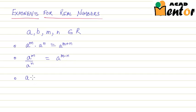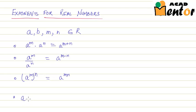The third property: a to the power m, whole to the power n, is equal to a to the power mn. The fourth one: a to the power m, multiplied by b to the power m, is equal to ab whole to the power m.